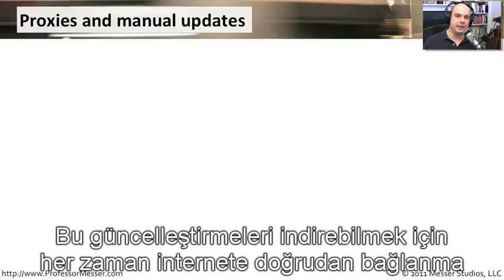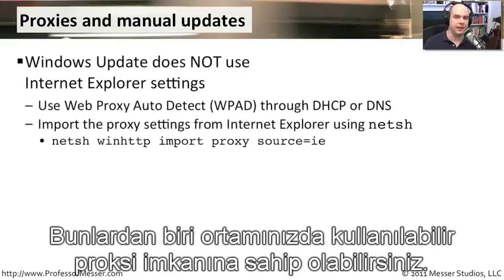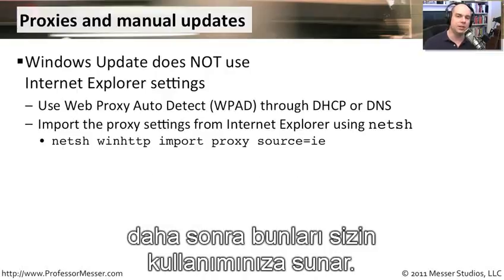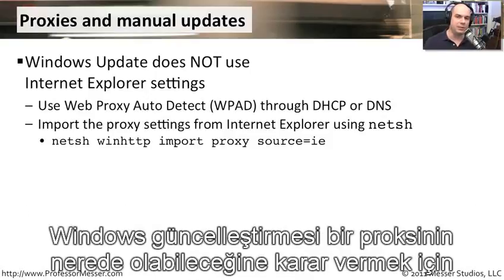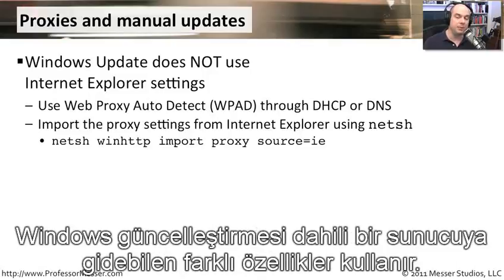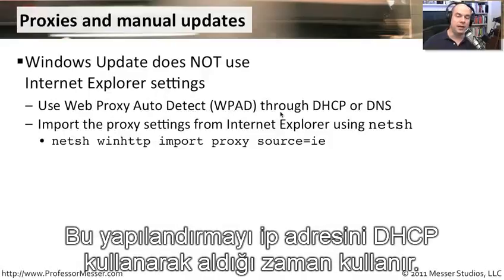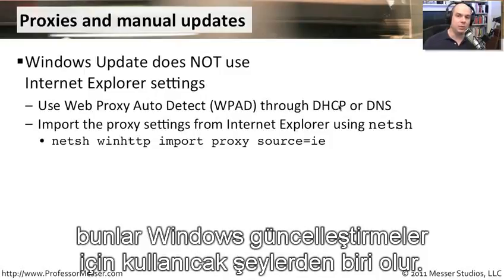You don't always have the luxury of being directly connected to the internet to download updates, so there are other options. Your environment may have proxies available. Note that Windows Update does not use the proxy settings configured in Internet Explorer — it may be going to an internal server. You should use Web Proxy Auto Detect, called WPAD, configured through DHCP or DNS settings, as that's what Windows Update will use for its proxy.